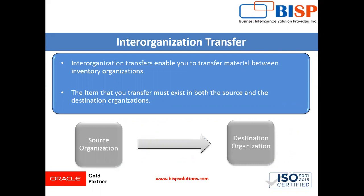Inter-organization transfer enables you to transfer material between inventory organizations. It can be necessary if you define multiple inventories, multiple warehouses, and manufacturing facilities as distinct inventory organizations. We are going to perform a transfer from one inventory to another — from the source organization to the destination organization. The item that you transfer must exist in both the source as well as the destination organization.